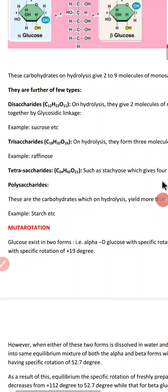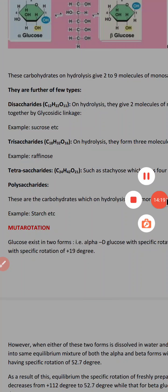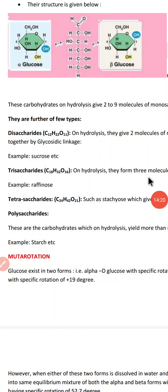Polysaccharides are carbohydrates which on hydrolysis yield more than ten monosaccharide units. Examples of polysaccharides are starch and cellulose.